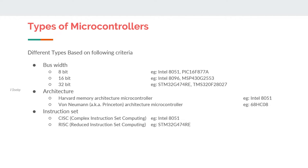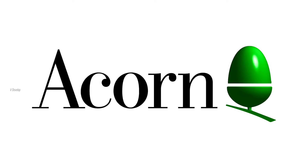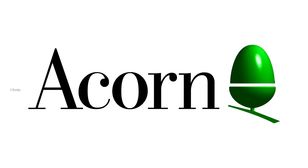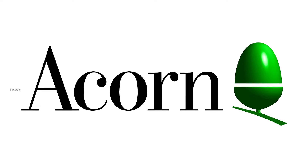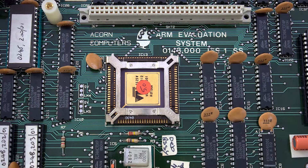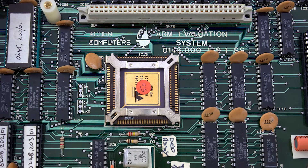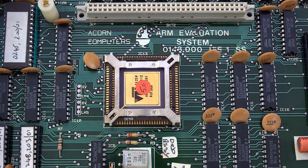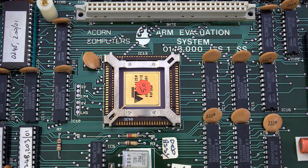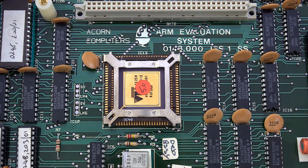Now we can tell some history. Back in the 1980s, Acorn Computers developed a processor using this RISC instruction set, and we call it the first ever very famous ARM processor.